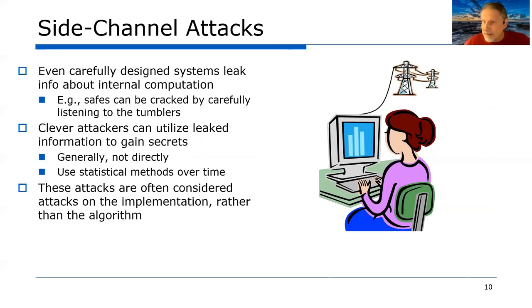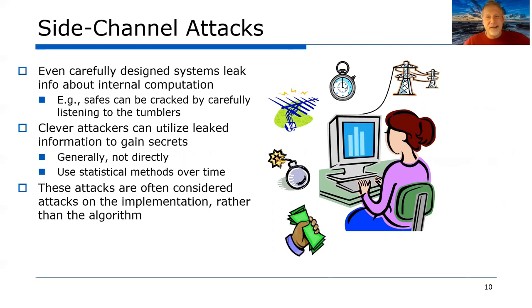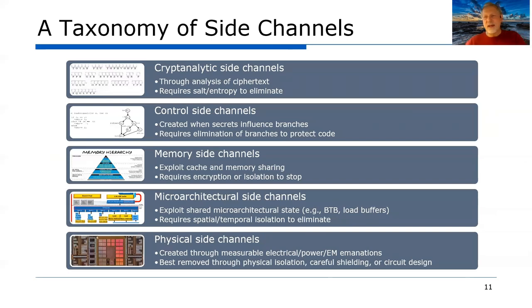We can look at the power draw of the system to tell us what kind of computation it's doing. We can look at the timing of operations to tell us what the system is doing — whether it's executing or not. We can look at the electromagnetics, which is really information rich — there are demonstrations of single encryptions revealing all the key information. We can do fault-based attacks: inject faults into circuit operations, causing cryptographic operations to fail, which reveals information. And finally, the other side channel we have to consider is the people in our system — social attacks using bribery.